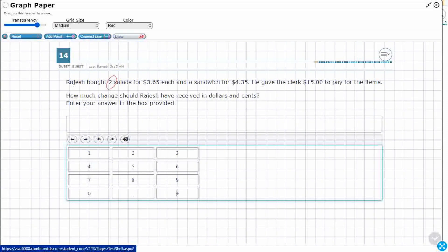So Rajesh bought two salads for $3.65 each. Alright, so let's draw that. Here's my salad, $3.65. Here's another salad, $3.65. And a sandwich for $4.35, just one sandwich. Let's make it like a foot long or something. So $4.35. There's my foot long.